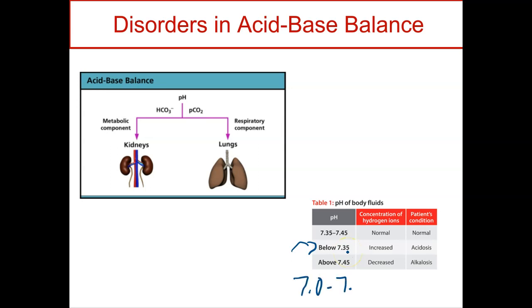Remember that the pH limits for life are 7.0 to 7.8, and we are looking at arterial blood pH.